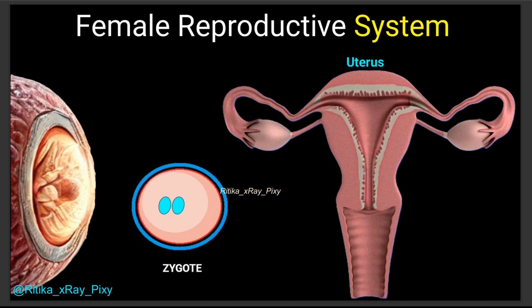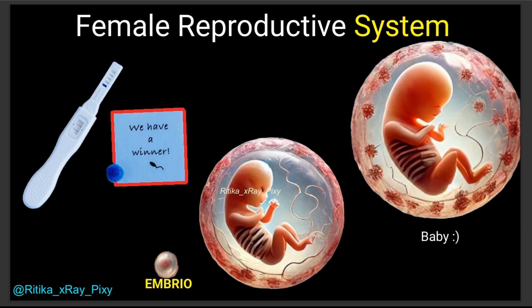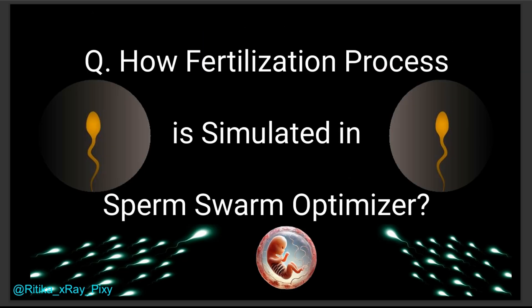After fertilization, the zygote begins dividing into smaller cells in a process called cleavage. These divisions continue until the zygote turns into a ball of cells known as a blastocyst. The blastocyst then travels to the uterus and buries itself in the thick uterine lining in a process called implantation. This is where the embryo starts to grow and pregnancy officially begins.